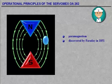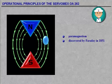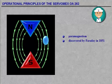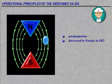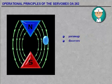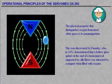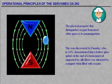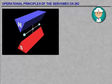The physical property that distinguishes oxygen from most other gases is its paramagnetism. This was discovered by Faraday who, in 1851, demonstrated that a hollow glass sphere at the end of a horizontal rod, supported by silk fibres, was attracted by a magnet when filled with oxygen.